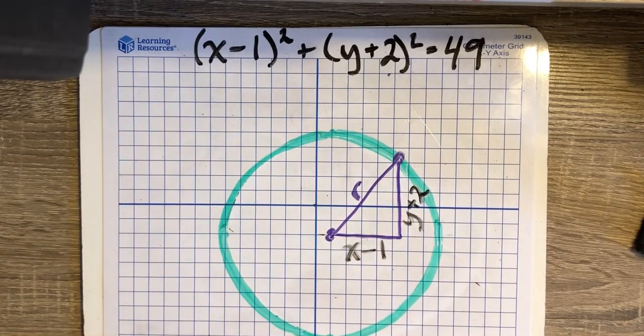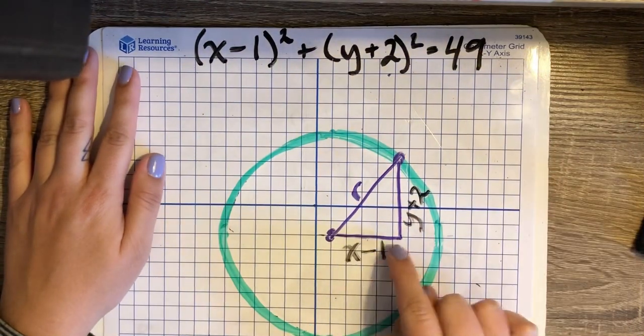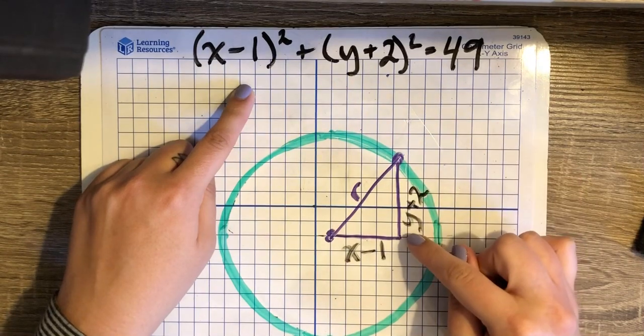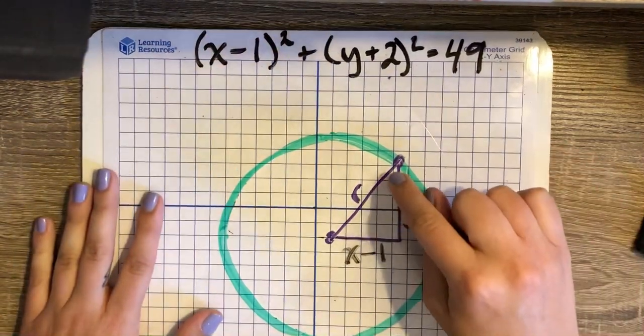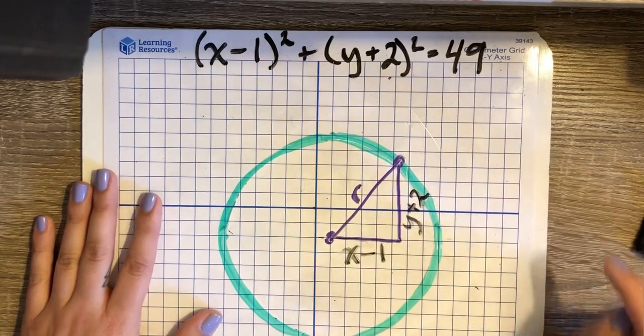So now that we see this triangle, I can understand how it matches the equation up here. Because this first leg, x minus 1 squared, plus the other leg, the vertical leg, y plus 2 squared, would be equal to the radius squared, which is 7 squared, which is 49.